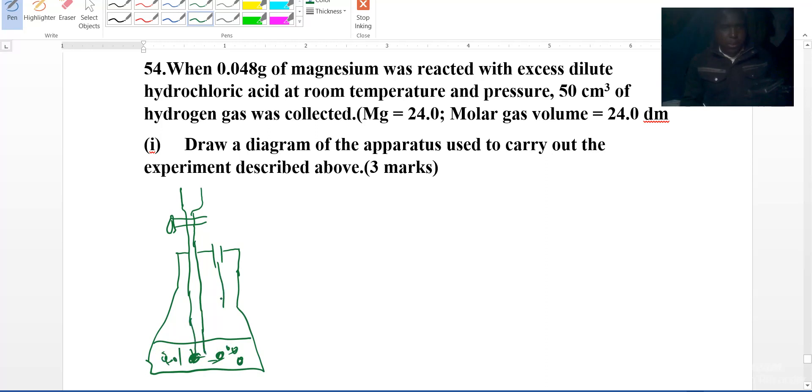This one should come here and pick the hydrogen from here and bring it. This is the delivery tube. This can be collected by over water method.